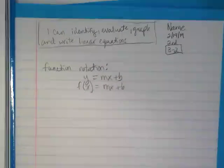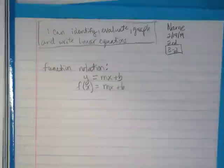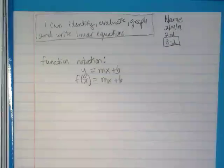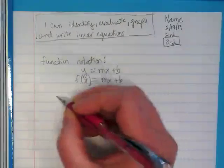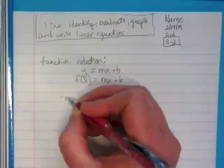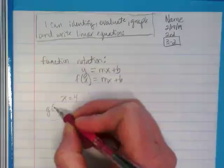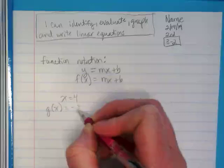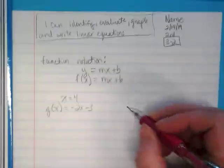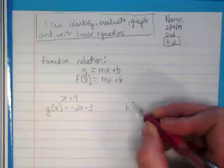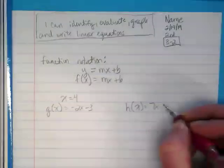If you have your book open, turn to page 96, we're going to do the try it together. We are being given an input of x equals 4. The first equation we're given is g of x equals negative 2x minus 3. And the second equation we're going to solve is h of x equals 7x plus 15.